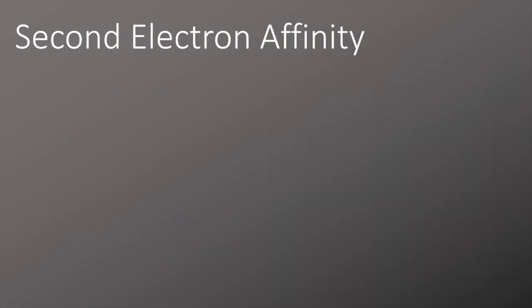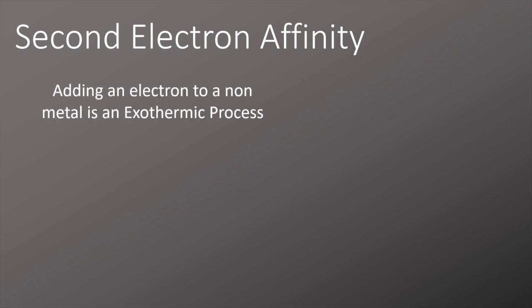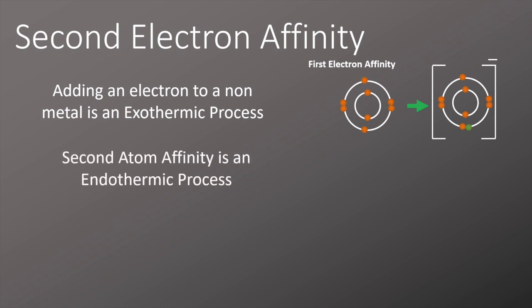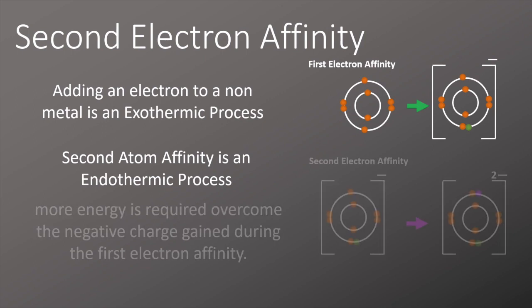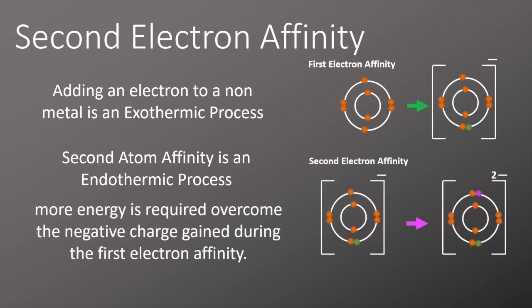So you remember from the definitions episode, we talked about the first electron affinity and the second electron affinity. The first electron affinity is an exothermic process as we add an electron to an atom to form a negatively charged ion. The second electron affinity is actually an endothermic process. And this is because we're taking a negative electron and we're pushing it towards an already negatively charged ion. And there's some repulsion there, so we have to put more energy in. So this is an endothermic process.